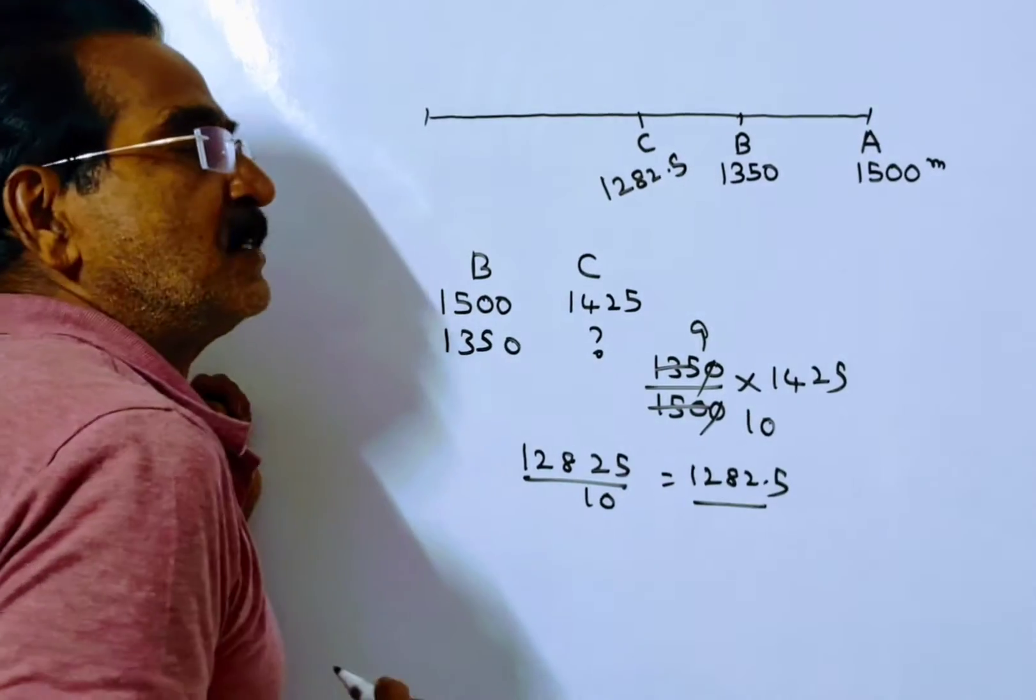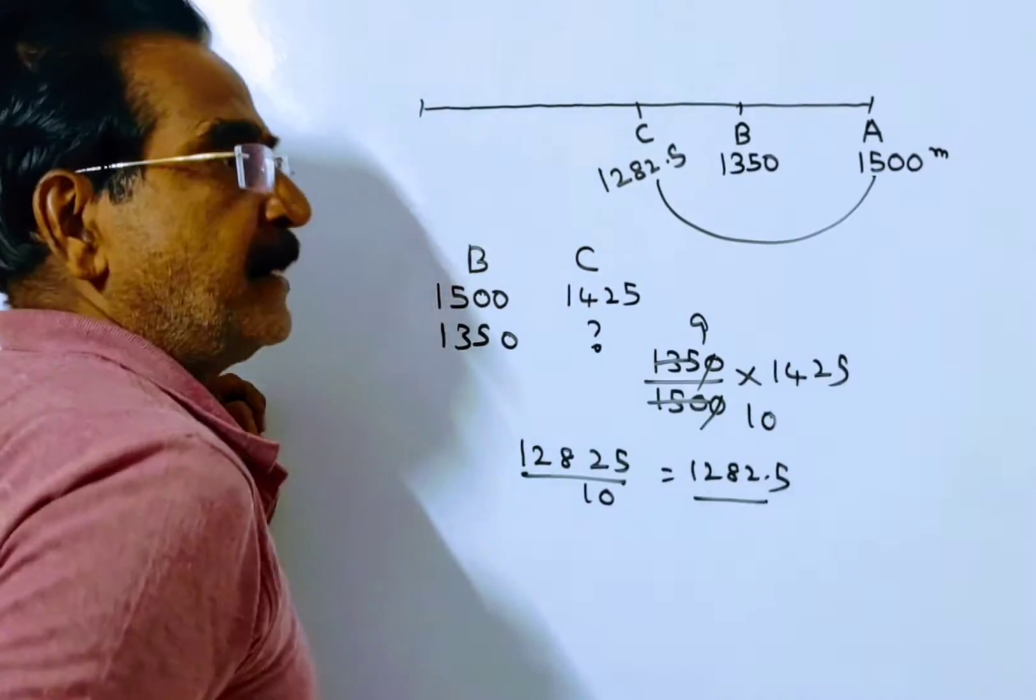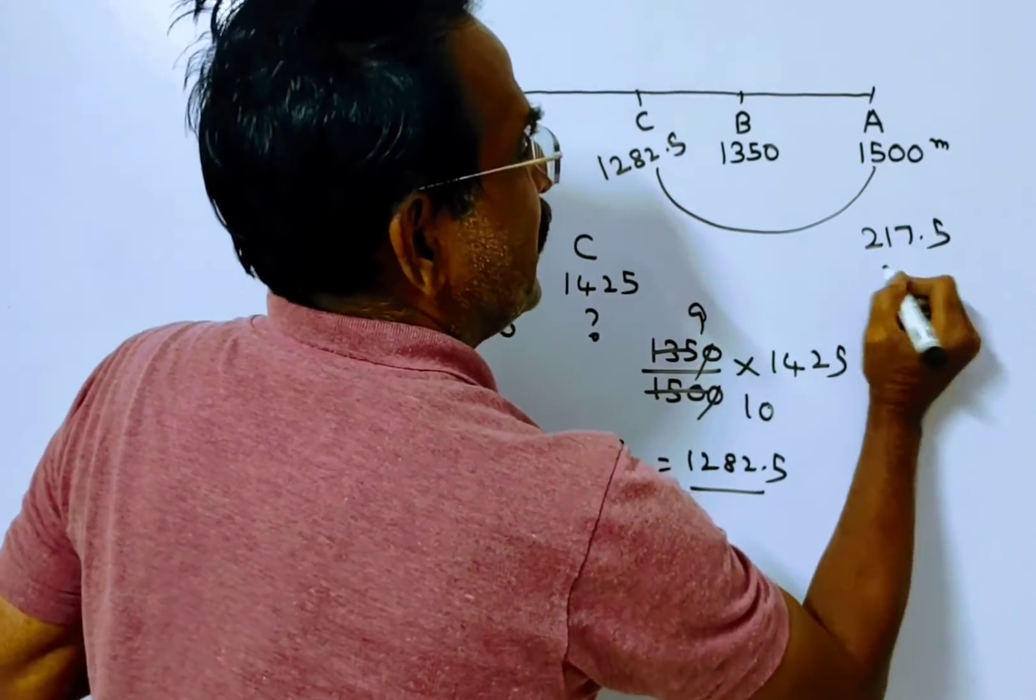So, our question is by how many meters A beats C. The difference between these two is 217.5 meters.